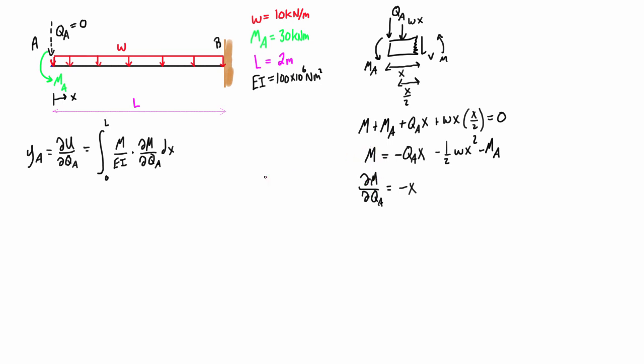Now we have an expression for the partial derivative of M with respect to QA and we also have an expression for M. Basically we can just plug those into the respective places right here. What we want to do is we can bring out the 1 over EI to start with, set this from zero to L.